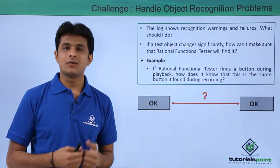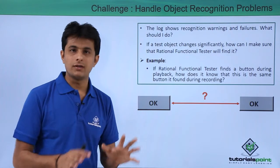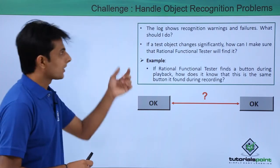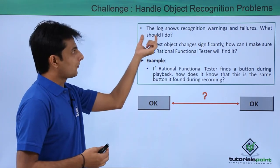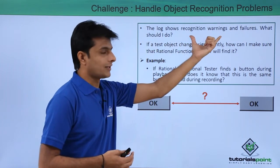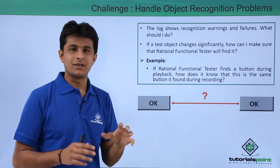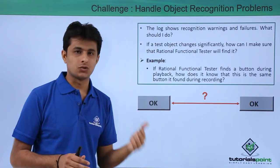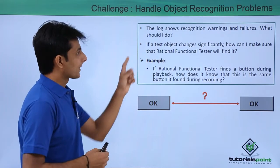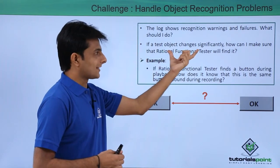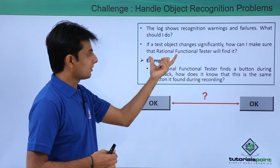We have a problem statement: in case if I get a warning or error message, how will RFT recognize? When I execute a particular test, I get a log file and the log file shows recognition warnings and failures. That means it is not able to recognize - either it throws warnings or failures. So now what should I do here?